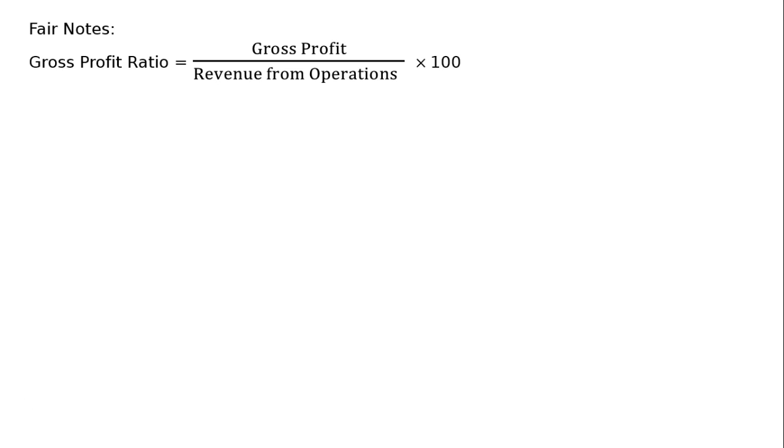Now, in the final notes, we have to find out gross profit ratio, that is gross profit upon revenue from operations into 100. We have got both the components in the working notes. That is Rs. 80,000 upon Rs. 4 lakh into 100, which equals 20%. And this is the final answer.